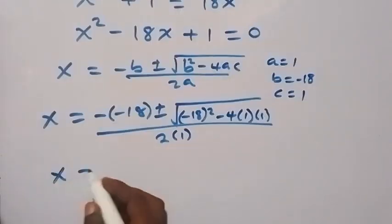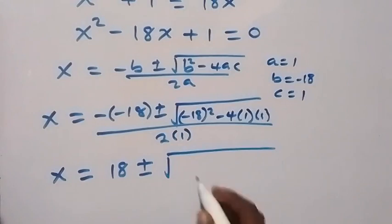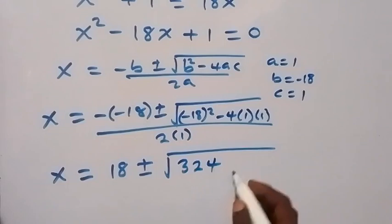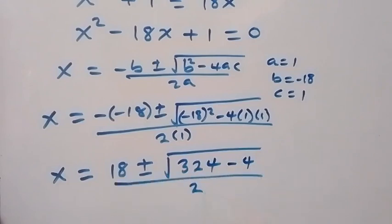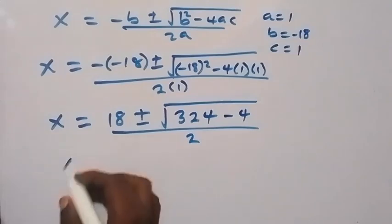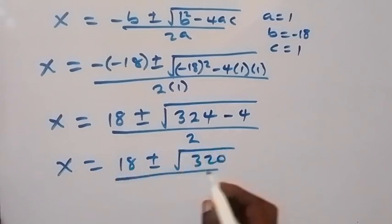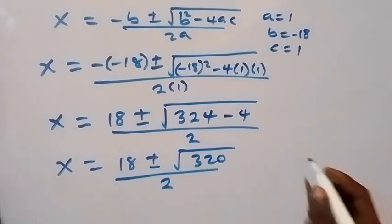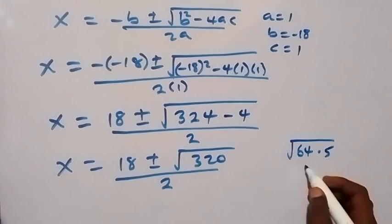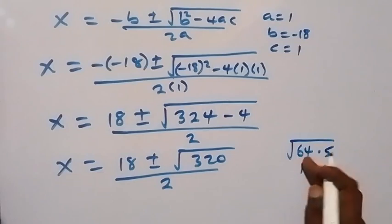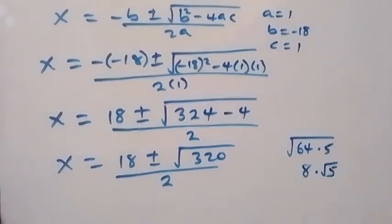From here, x equals 18 plus or minus square root of 324 minus 4, divided by 2. That gives square root of 320. We can write 320 as 64 times 5, and the square root of 64 is 8, so this becomes 8 root 5.